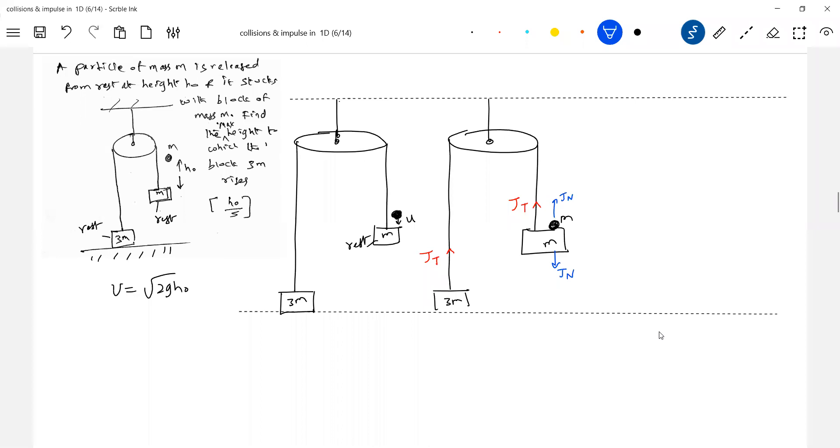Here a normal impulse will act. This JN will make the block M move suddenly. String will be jerked, sudden increase in tension and impulse is set up. When impulse acts on your body, it will acquire a velocity. Why should the velocity V be the same? They are connected by a common string and the string is inextensible, so they must have common velocity.